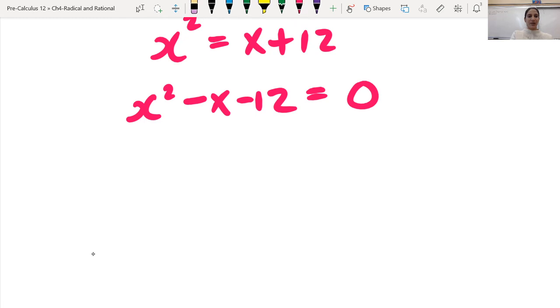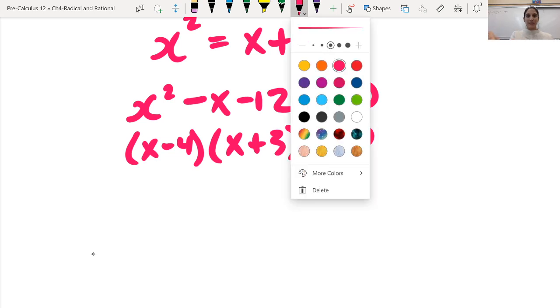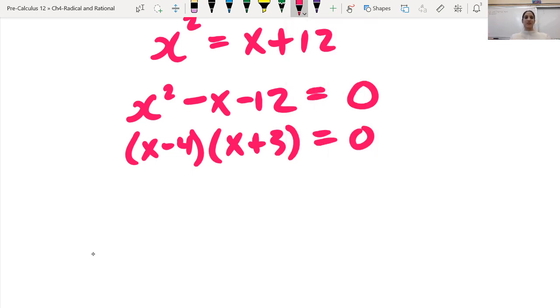So two numbers that multiply to negative 12 and add to negative 1, so I know that this must be x minus 4 and x plus 3. Just going back to my factoring skills in order to do that.